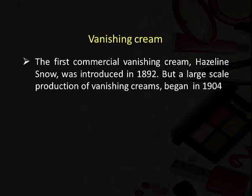Next we take up vanishing cream. Vanishing cream gets its name from the fact that it leaves no trace when applied to the skin — it almost vanishes. It is an emulsion of oil-in-water type, meaning less amount of oil and more amount of water. Vanishing creams are more easily washed off compared to cold creams, as it is harder to wash off the oil phase of cold creams. The first commercial vanishing cream was named Hazeline Snow, introduced in 1892, but large-scale production began in 1904. Vanishing cream was generally used in summer and was also called summer cream, whereas cold cream was used in winter and called winter cream.